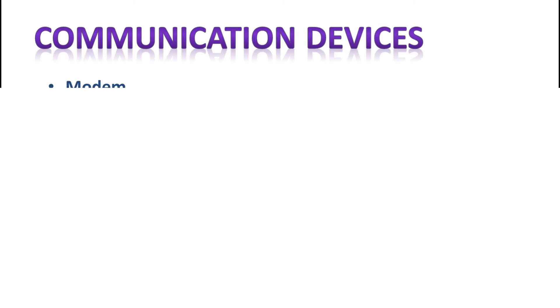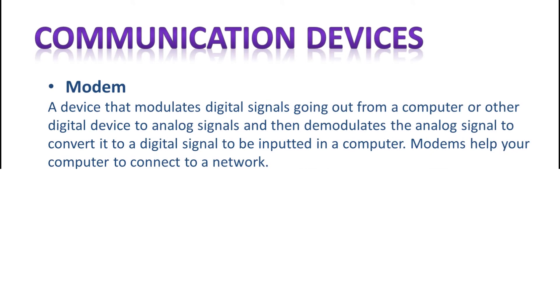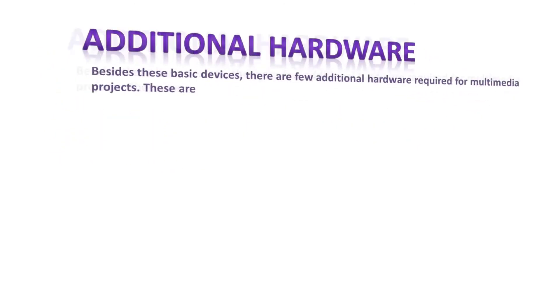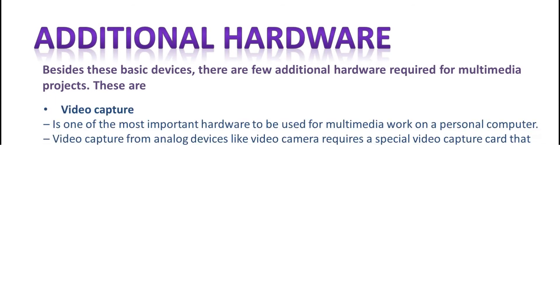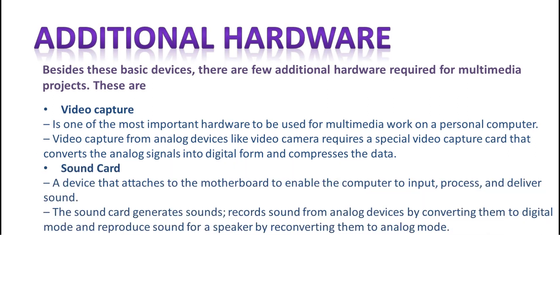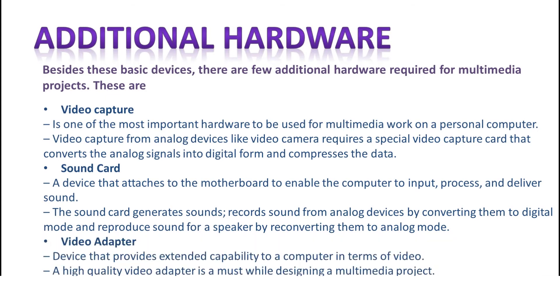You also need a communication device. A communication device transmits signals over communication wire or wirelessly. A modem modulates digital signals from a computer or other digital device to analog signals, and then demodulates analog signals to convert them back to digital signals to be inputted into a computer. Besides these basic devices, you also need a few additional hardware items for multimedia projects. Video capture is one of the most important hardware components for multimedia work on a personal computer. A sound card is attached to the motherboard to enable the computer to import, process, and deliver sound. A video adapter provides extended capability to a computer in terms of video.